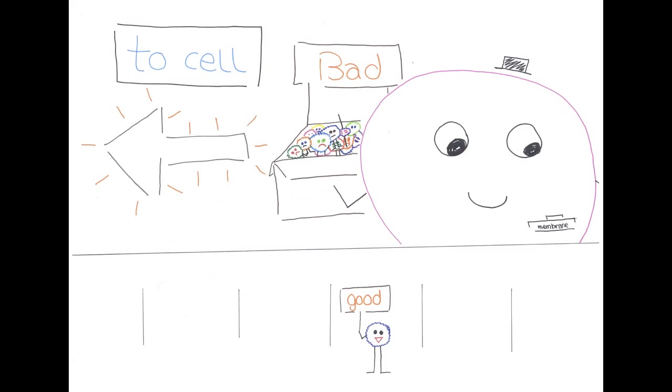The cell membrane also helps control the movement of particles and substances that travel in and out of the cell, meaning that it is semi-permeable.